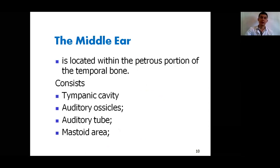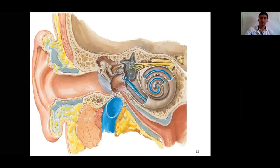The middle ear is located within the petrous portion of the temporal bone. It consists of four main components: the tympanic cavity, the auditory ossicles within the tympanic cavity, the auditory tube, and the mastoid area, which is located posteriorly.